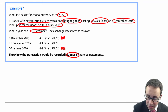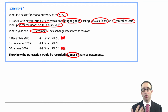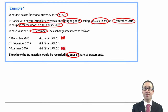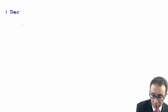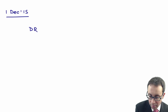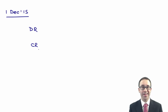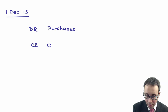The year end is the 31st of December. At that date we need to identify what is monetary and what is non-monetary. Anything monetary, we retranslate with gains and losses going to profit or loss. Anything non-monetary, we do not retranslate. On the 1st of December 2015, we made a credit purchase, so let's do the journal entry first: debit purchases and credit payables.